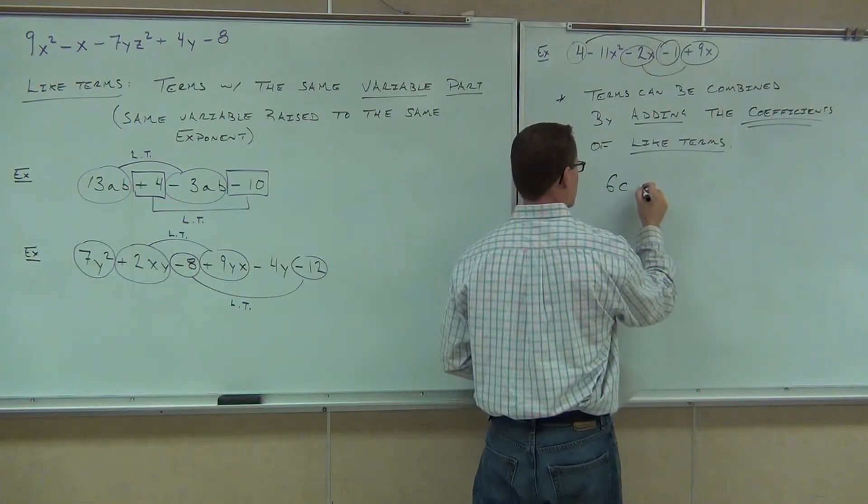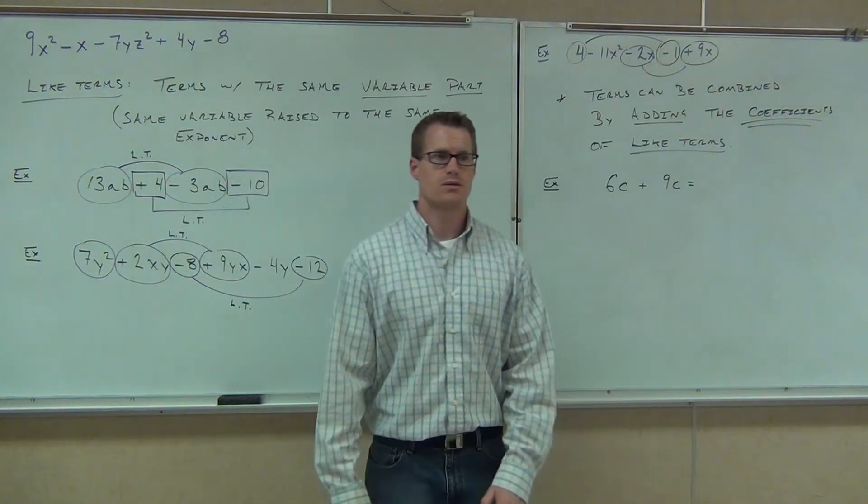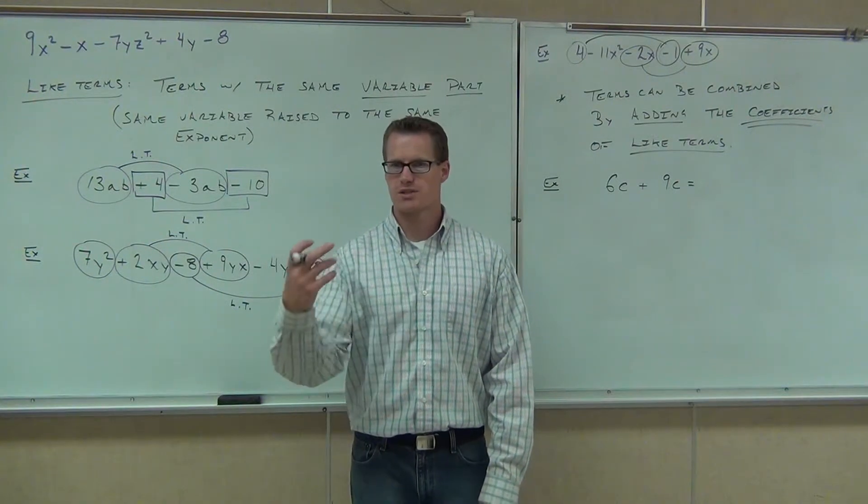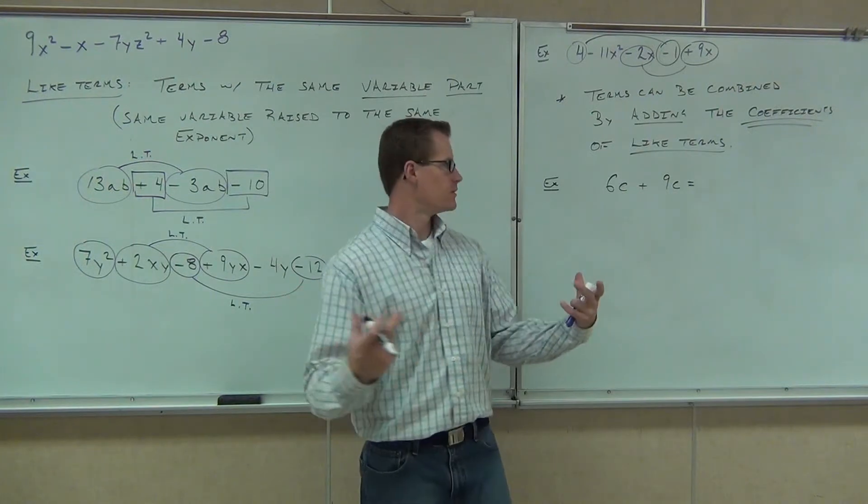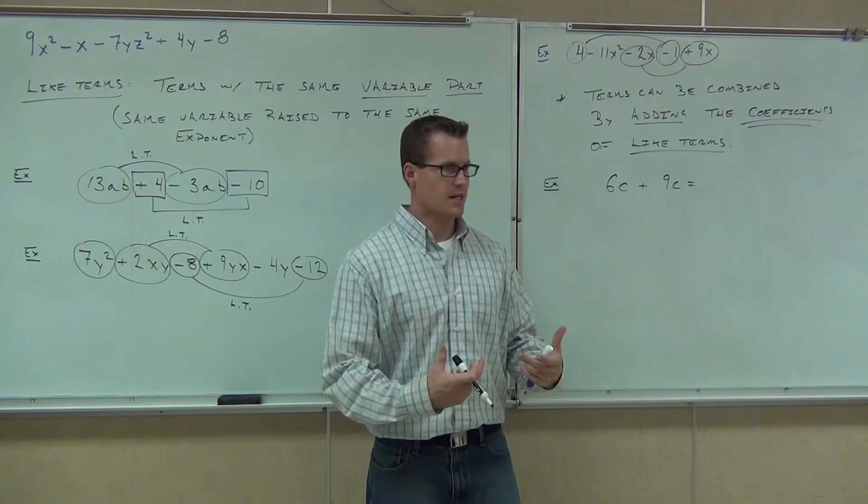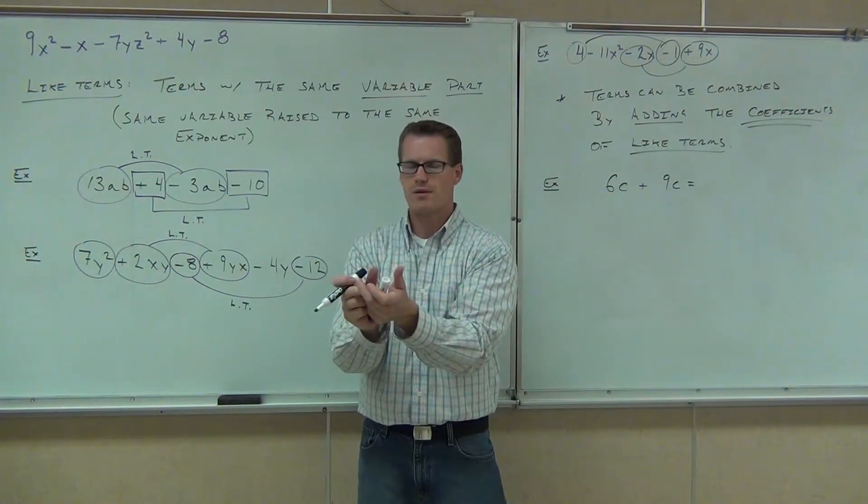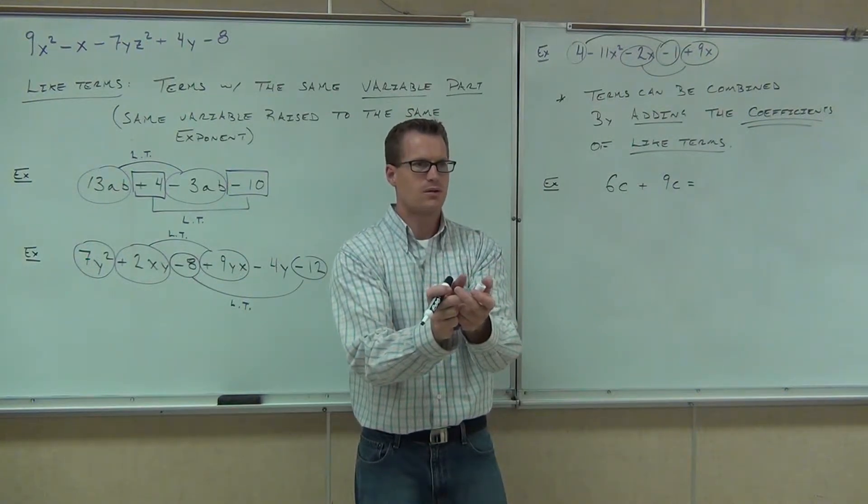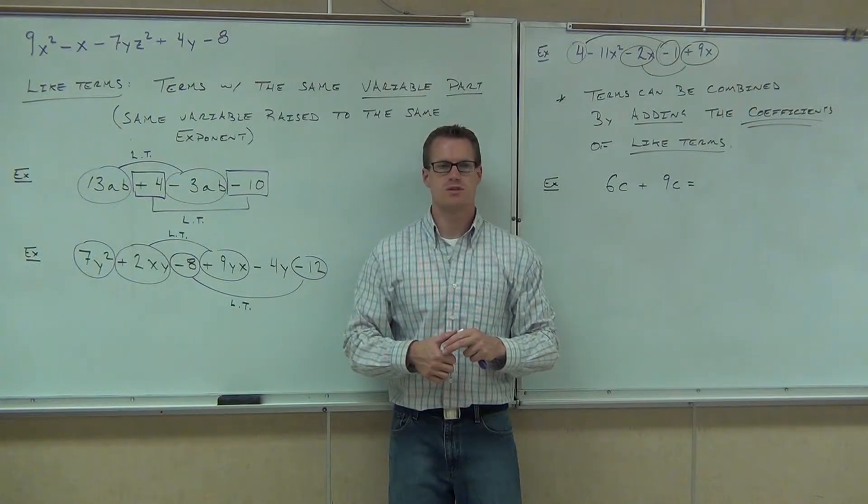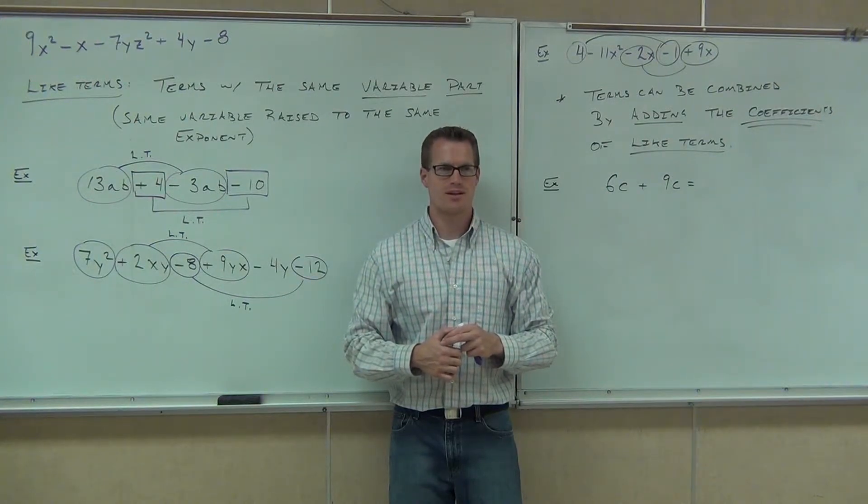Let's use a C here. 6C plus 7C. Firstly, are they like terms? Yes. How can you tell they're like terms? Well, it doesn't make sense, doesn't it? If you go into the grocery store, you have 6 carrots, and you have 9 carrots. How many carrots do you have? 15 carrots. So if we have 6C and we have 9C, and we want to add those together, they're like terms that can be combined, right? They both have C to the first power there. So if we have 6 carrots in one hand, 9 carrots in the other hand, how many carrots do we have again? 15 carrots.